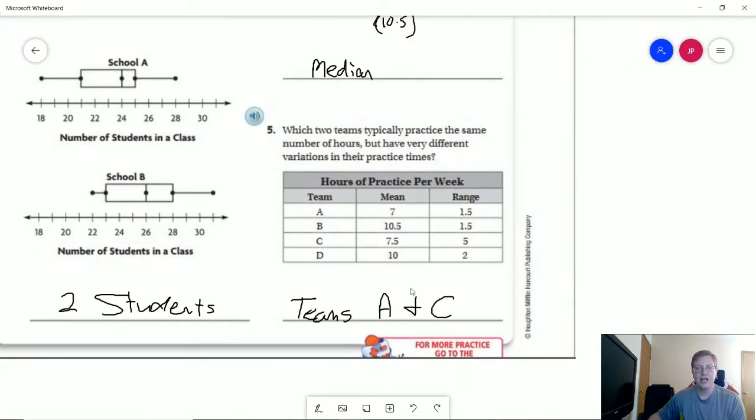And then for our last problem, number five, we're looking at teams A and C. So we're saying that they practice roughly the same amount of hours. A and C, there's only a half hour difference per week. But they have the largest range difference. And so five to one and a half. So there's about a three and a half hour difference in practice times as far as how their data values are spread out.